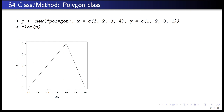Here I'm creating a new polygon with the new() function, giving it the class name 'polygon' and filling in the slots: x = c(1,2,3,4) for the x coordinates, and y = c(1,2,3,1) for the y coordinates. Saving it to object p, when I call plot(p), the generic function checks the class — 'polygon' — finds my defined method, and calls it. You can see that plot connects all the dots and draws the polygon, as expected.